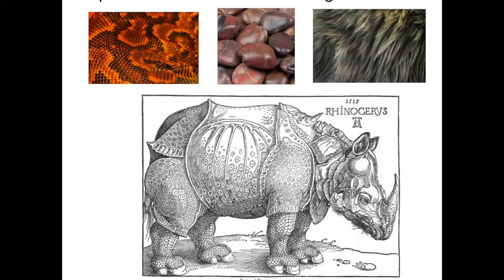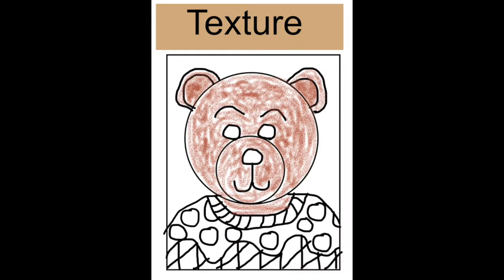Now we're going to talk a little bit about texture. Texture is how something feels. It might be rough, bumpy, prickly, jagged, fuzzy and furry, or hard and scaly. We can create texture in our art so that our bear looks like he has fur.